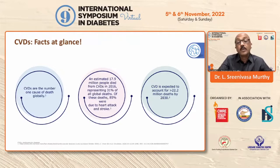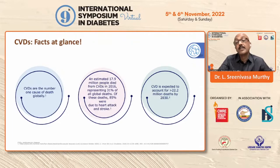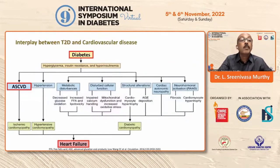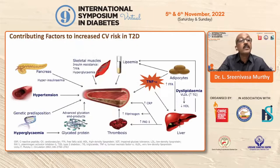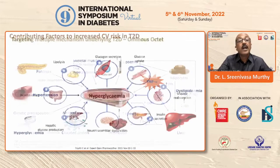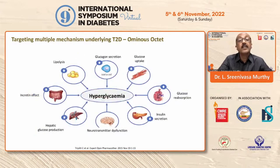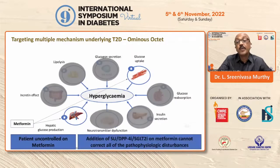CVD is expected to account for more than 22 million deaths, and this is where the cardiometabolic risk is highest. That is what we need to prevent as primary prevention when you diagnose a patient. There is definitely an interplay between diabetes and cardiovascular diseases. These are the basic pathophysiological ominous octet that we talk about, and we need to target these multiple mechanisms whenever you diagnose for the first time.